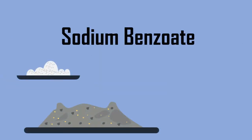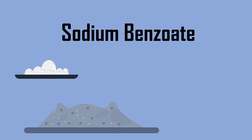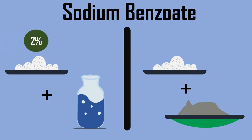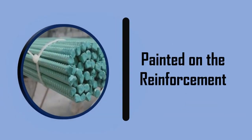In general, sodium benzoate is commonly used as a corrosion inhibiting admixture to protect the steel in reinforced concrete. Sodium benzoate is applied in two ways: 2% sodium benzoate is used in the mixing water, and the other is 10% sodium benzoate mixed with cement slurry. The obtained mix in both ways is painted on the reinforcement.